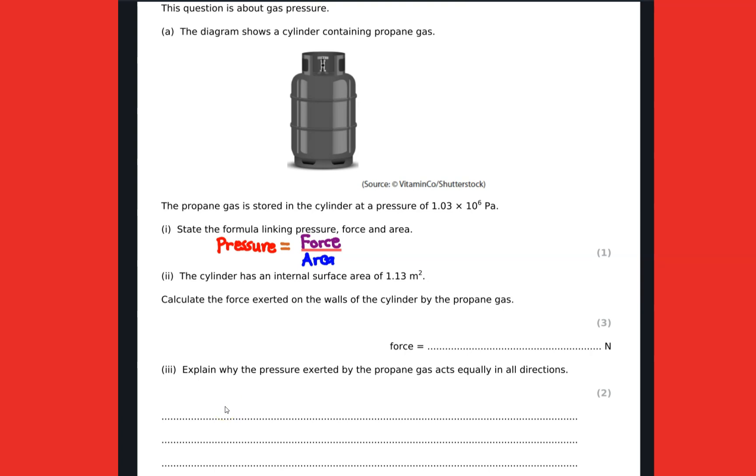Now the first question here, the diagram shows a cylinder containing propane gas. The propane gas is stored in the cylinder at a pressure of 1.03 times 10 to the power 6 pascals. Then we are supposed to state the formula linking pressure, force and area.